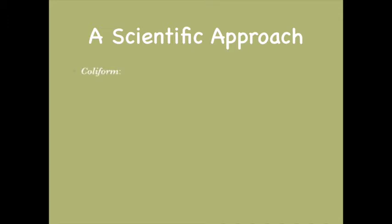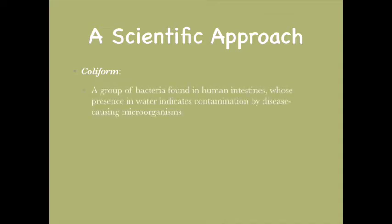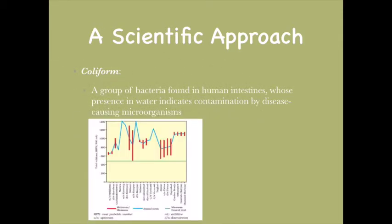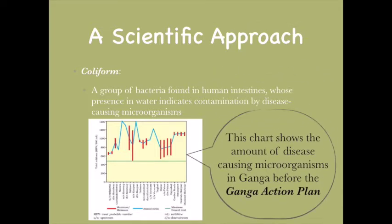Coliform is a group of bacteria found in the human intestine whose presence in water indicates contamination by disease-causing microorganisms. Given below is a chart which shows the impurity levels when you use coliform as an indicator. This chart shows the amount of disease-causing microorganisms in the Ganga before implementing the Ganga Action Plan, which was very high. So what can be done to reduce this?